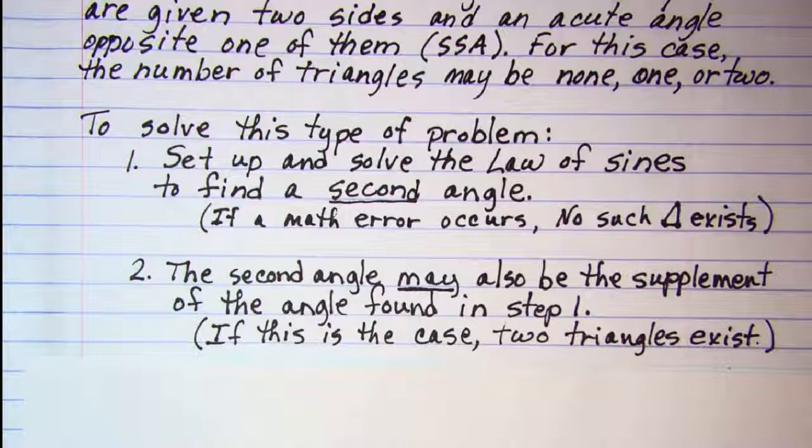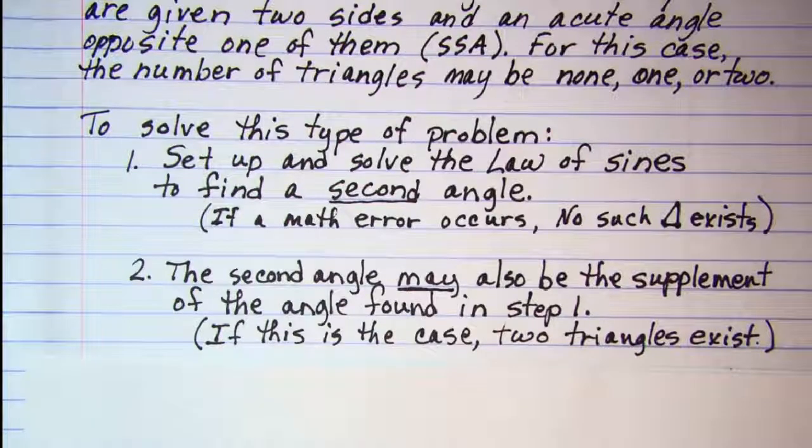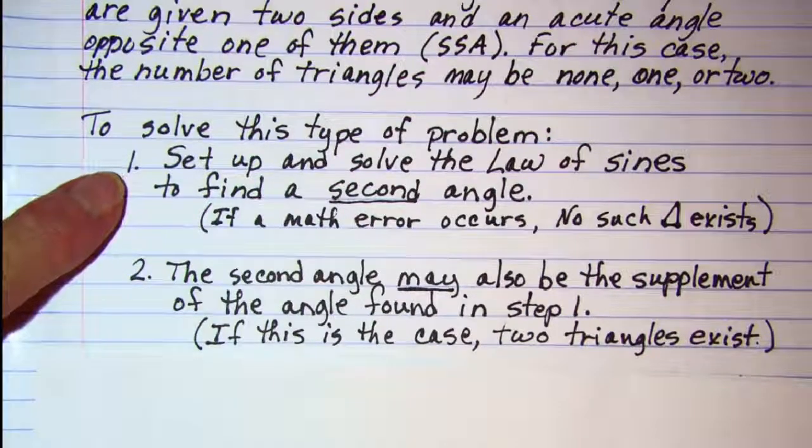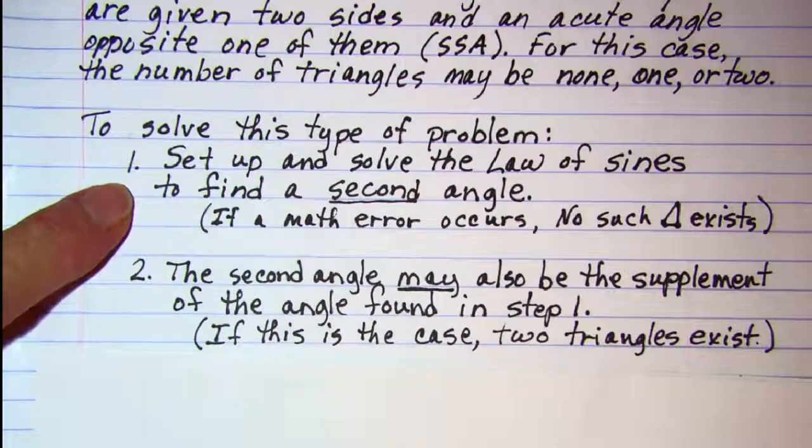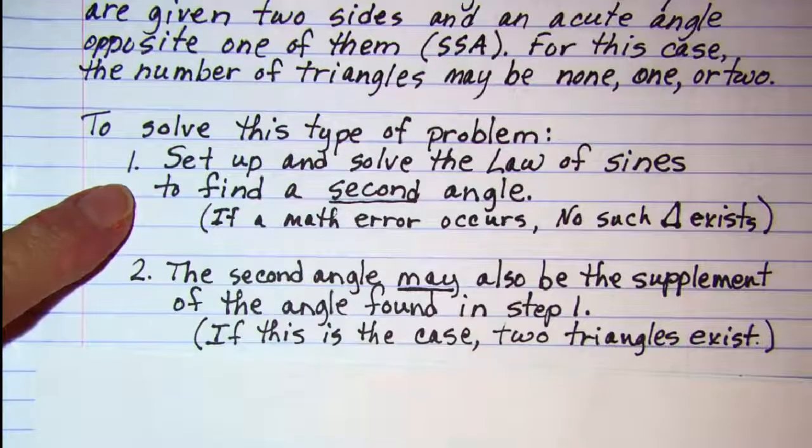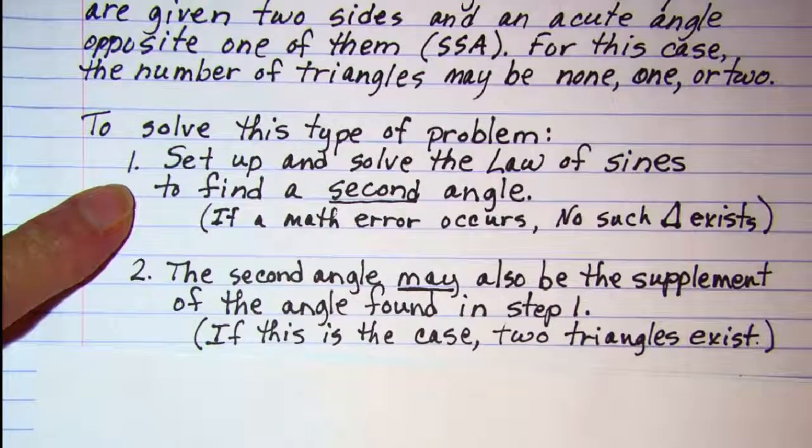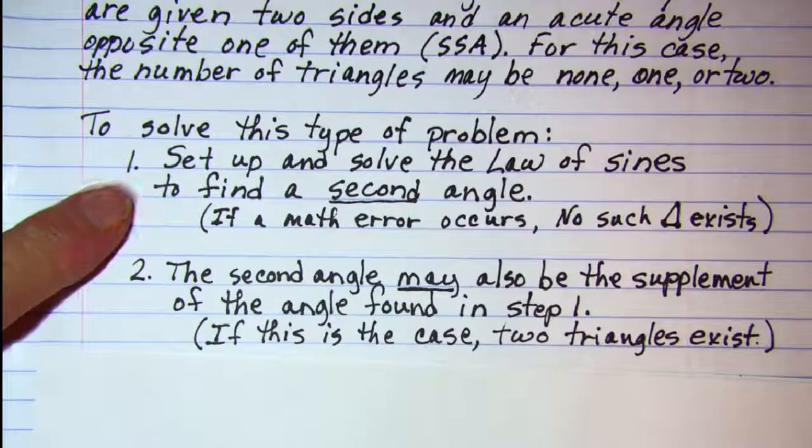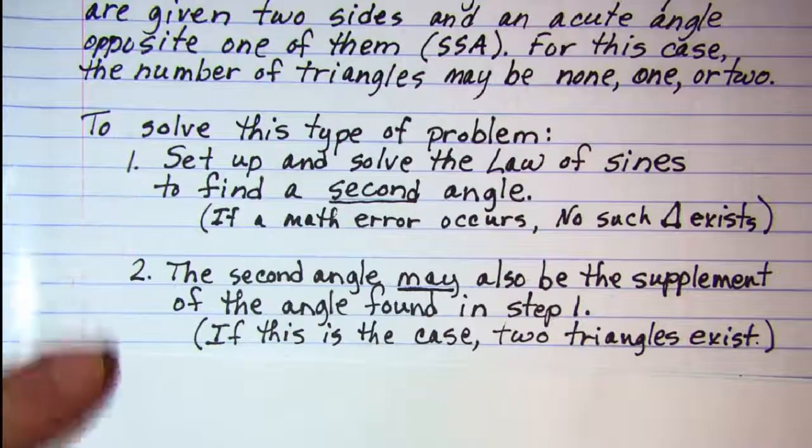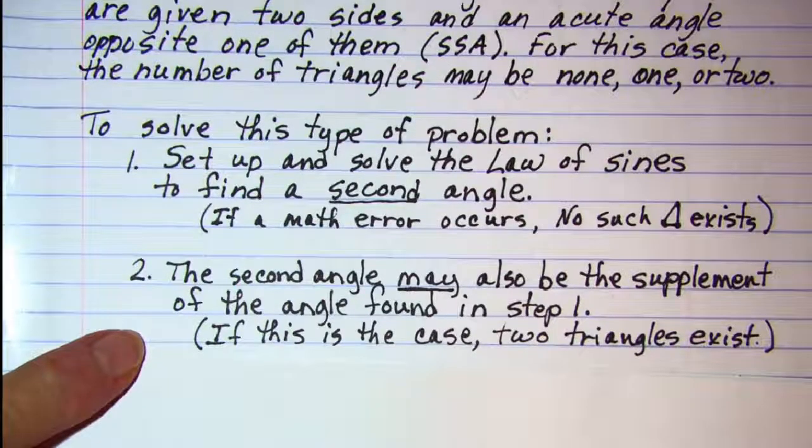The second angle may also be the supplement of the angle found in step one. So, after you find this angle from step one, assuming that you do find one, then subtract this angle from 180 to see if you may possibly have a second triangle.